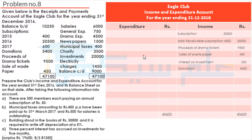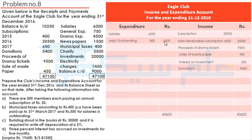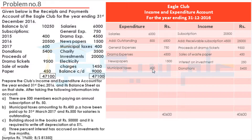Now we will see the payments side. First of all, salaries: in salaries there is Rs. 500 outstanding salaries, so we will add that. Total salaries Rs. 6,500. Next payment is general expenses Rs. 750. After that, drama expenses Rs. 4,500. After that, newspapers Rs. 1,500. And then municipal taxes Rs. 400.